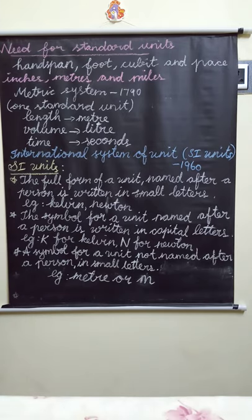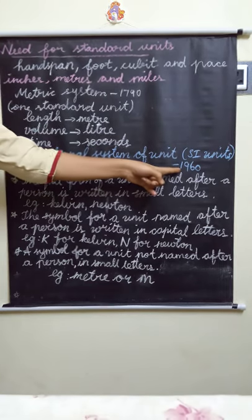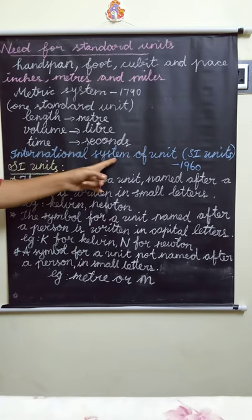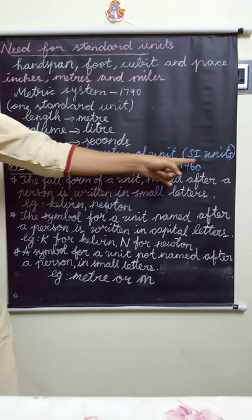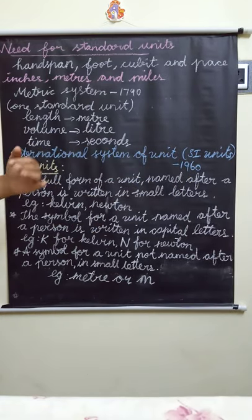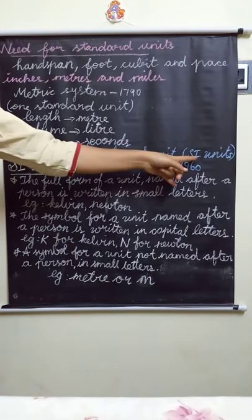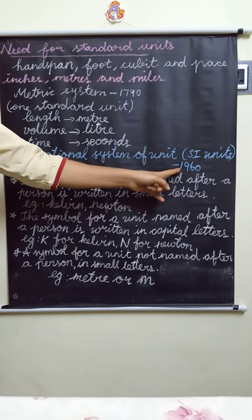After many years, the General Conference of Weights and Measures in 1960 adopted the system as the International System of Units, called SI units. It is used in most countries around the world. What is the system? International System of Units — SI units. In which year? 1960.